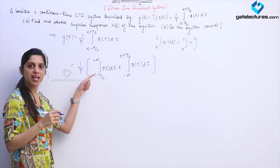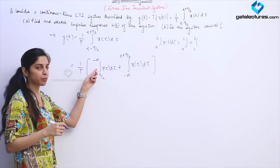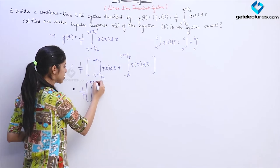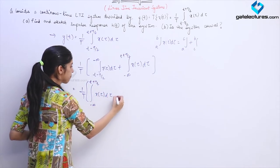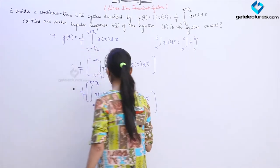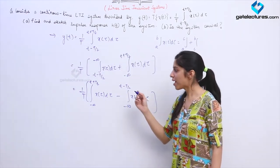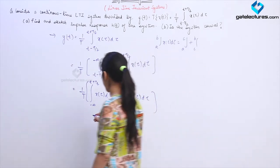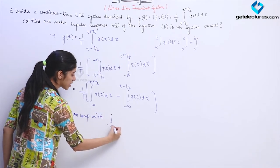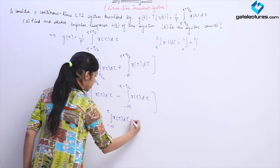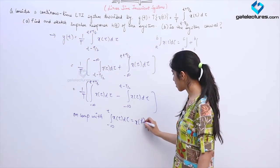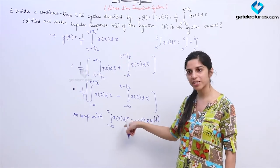I need minus infinity as the lower limit. So I invert the limits and put a negative sign, using integration properties. This gives: integral from minus infinity to t + T/2 of x(τ) dτ, minus the integral from minus infinity to t − T/2 of x(τ) dτ. Now comparing with the known form — if I had the integral from minus infinity to t of x(τ) dτ, that would be convolution of x(t) with u(t).